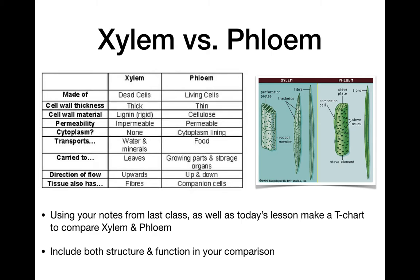Hopefully you got these answers: xylem has dead cells, phloem has living cells. Cell wall thickness is quite different — very thick and rigid in xylem, much thinner and more flexible in phloem, which makes sense because xylem provides structural support, almost like a skeleton for large plants. There's no cytoplasm in xylem because the cells are not living, and cytoplasm lines the phloem but not very much. Xylem is impermeable whereas phloem is permeable, allowing horizontal as well as vertical movement.